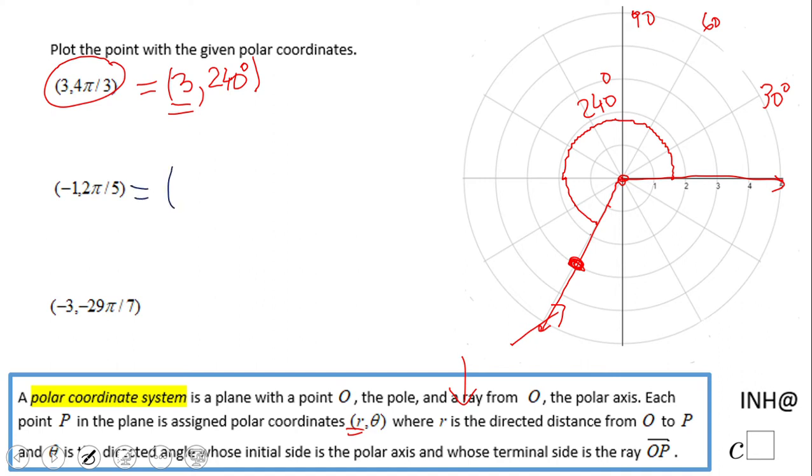The second one means negative 1 and 2π over 5, that is 72 degrees. So how are we going to do this?